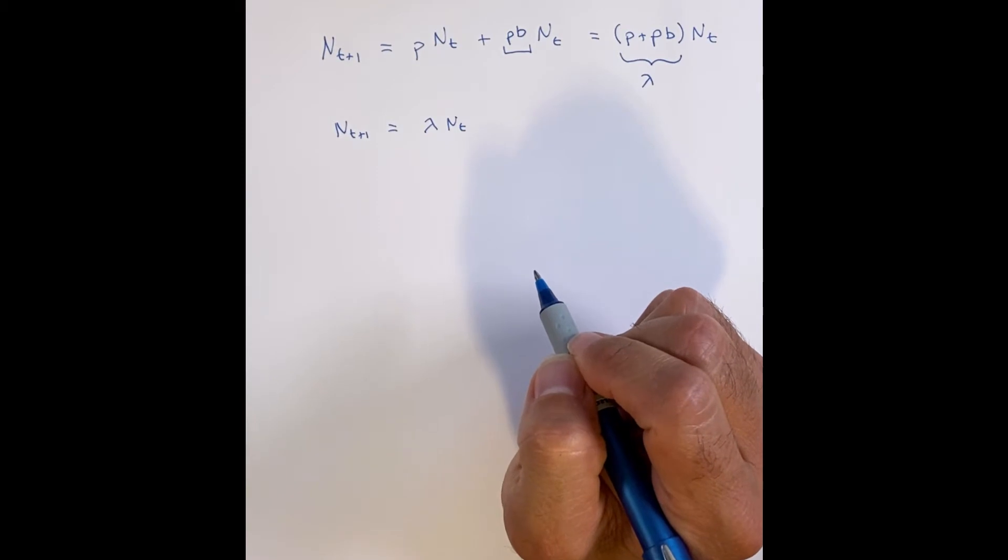So you've probably heard about lambda when it comes to COVID. This is pretty much what folks are talking about, that rate, that number that you multiply that determines whether the population is going to grow and how fast it's going to grow.